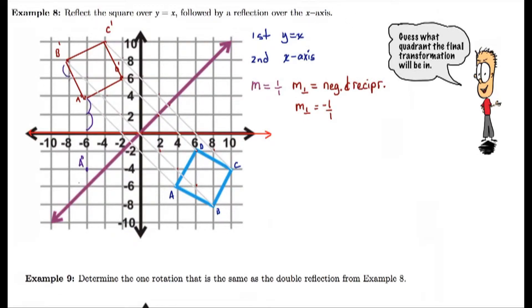The second reflection is across the x-axis. So I'm counting the distance the points are to the x-axis, and then I'm going to reflect them across on the side below. And I get my a double prime, b double prime, c double prime, d double prime.